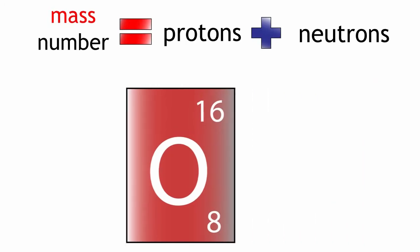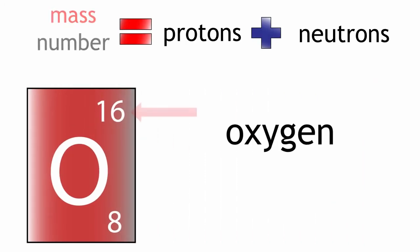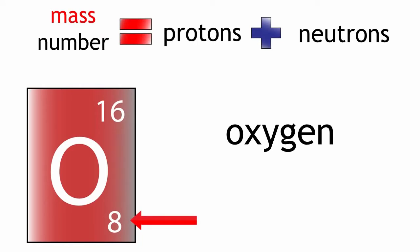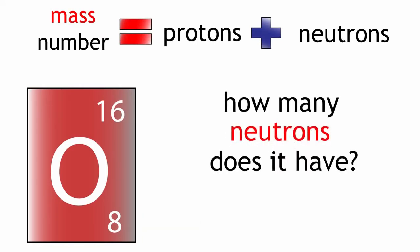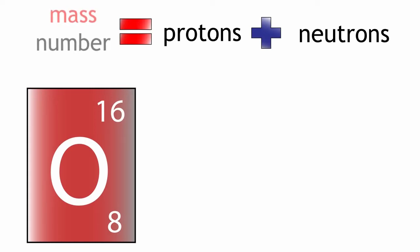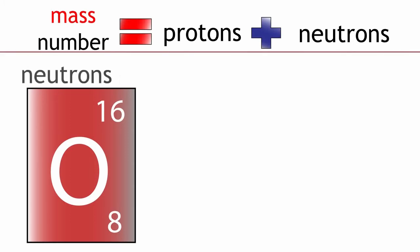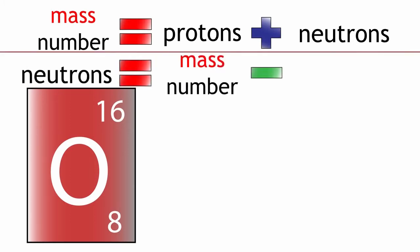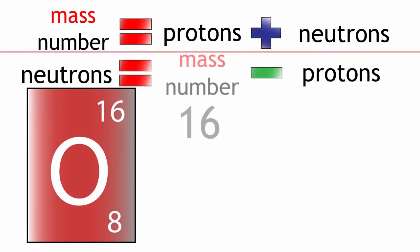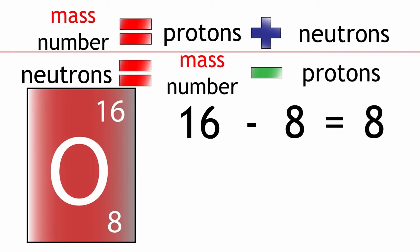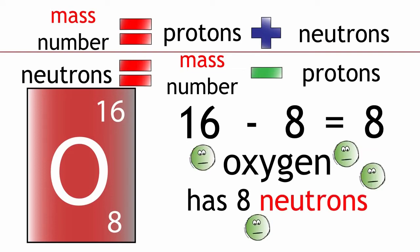So if we take oxygen — oxygen has a mass number of 16 and has eight protons. But how many neutrons does it have? Remember, mass number equals protons plus neutrons. We can rearrange this to show that neutrons equals mass number minus protons. Neutrons equals 16 minus 8, equals 8. Oxygen therefore has 8 neutrons.